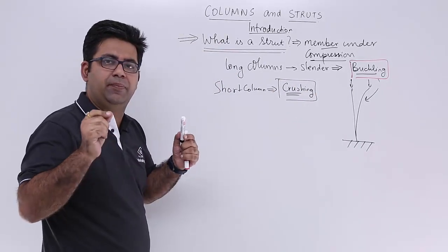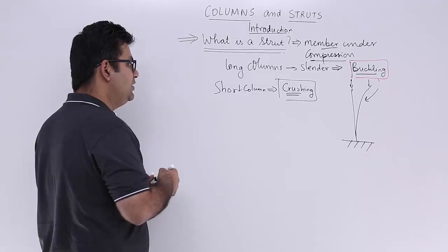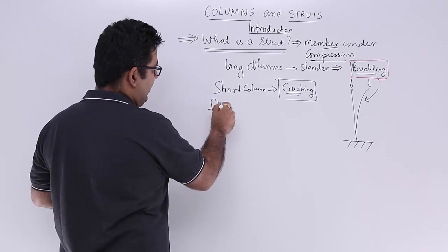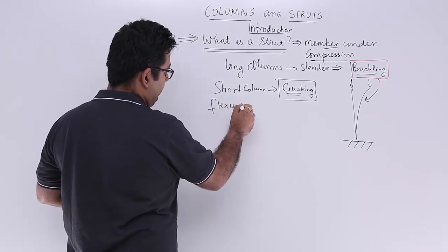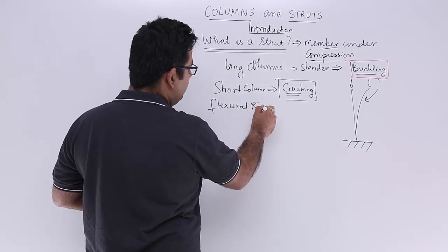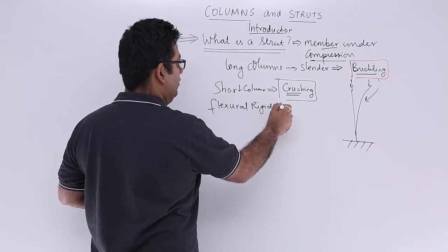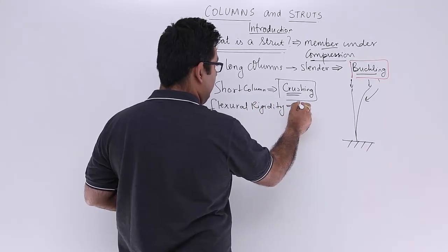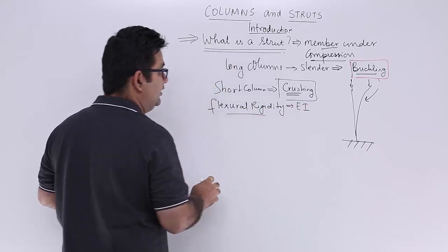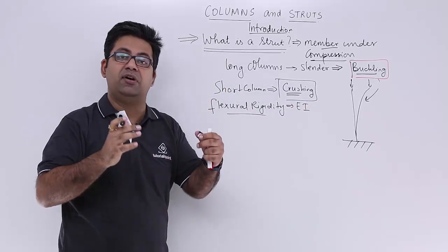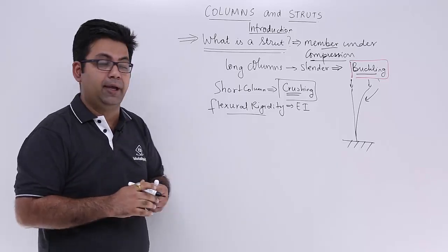Now if you talk about the resistance of a material to bending, it is a function of its flexural rigidity. Flexural rigidity is EI—this is what defines the resistance of a material to bending.